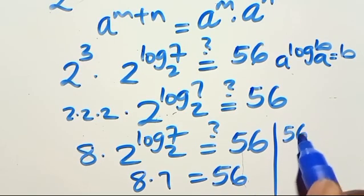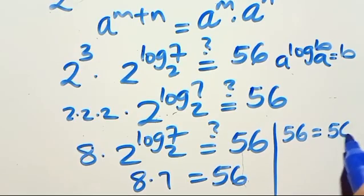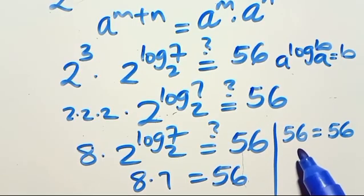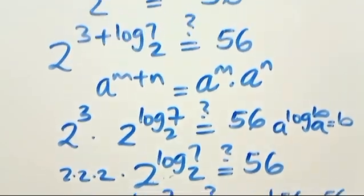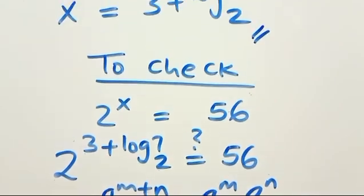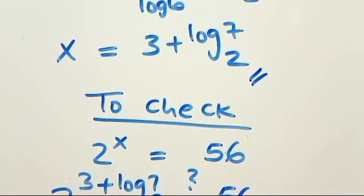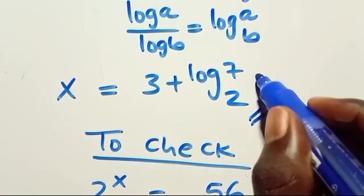Since 2 to the power of log base 2 of 7 equals 7, we get 8 times 7 equals 56. The left-hand side equals the right-hand side, confirming that our answer is correct.